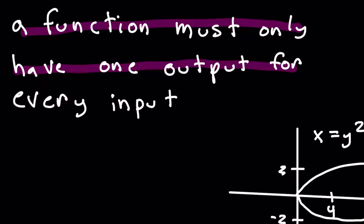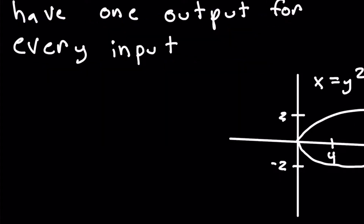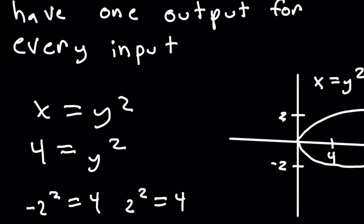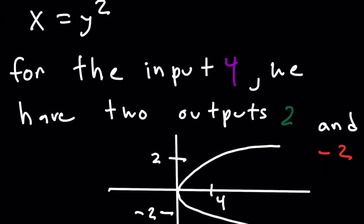This is extremely important for the vertical line test. We can see this using the example x equals y squared. If we plug in one x value — let's say 4 — what is y? Well, we know that negative 2 squared is 4, and we also know that 2 squared is 4. So there are two possible y values. When we plug in x equals 4, y can be either negative 2 or positive 2. So for the input 4, we have two outputs: 2 and negative 2.